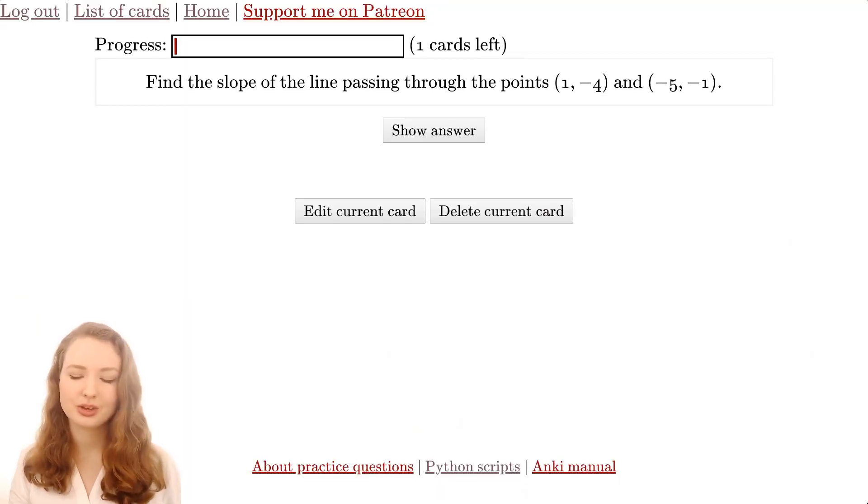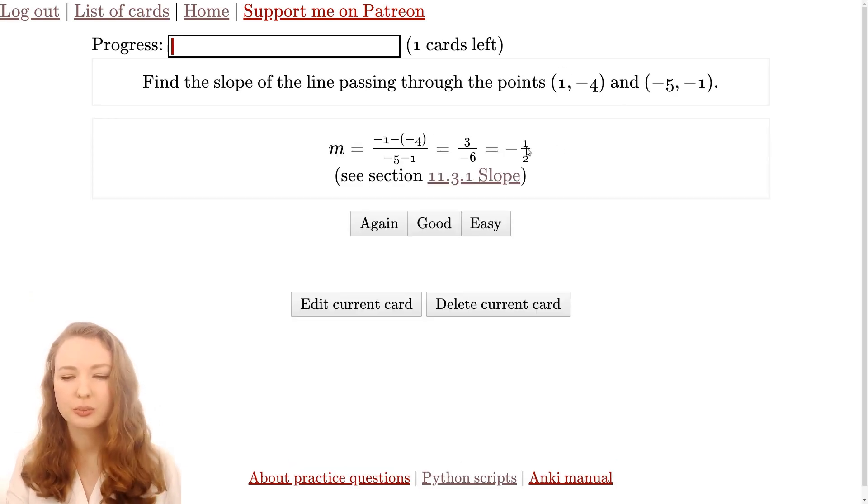Now if you don't practice this process, you're likely to forget it. I have a link below for a website where you can get practice questions for slope. It'll ask the question, you figure out the answer—you can do it in your head or work it out on paper—and then you click on show answer. You compare what you thought to that answer, and then you rate how easy it was. If you got it wrong or forgot how to do it, click again. If it was way too easy, click easy. If it was just alright, click good.